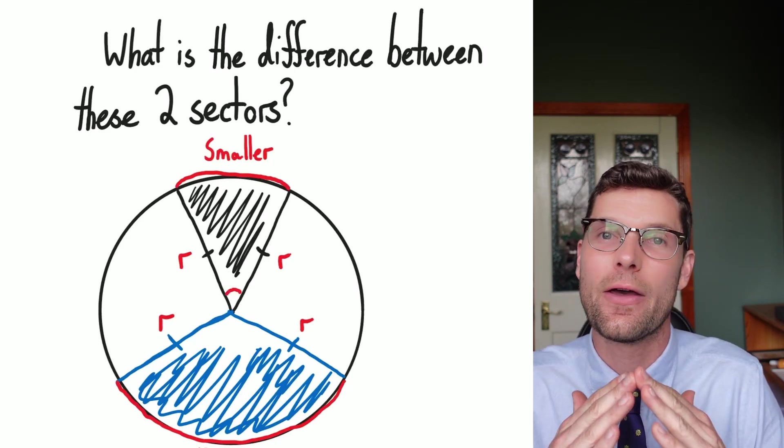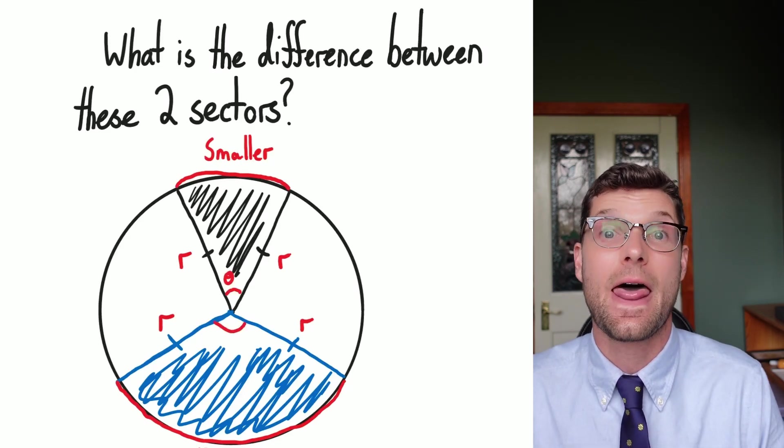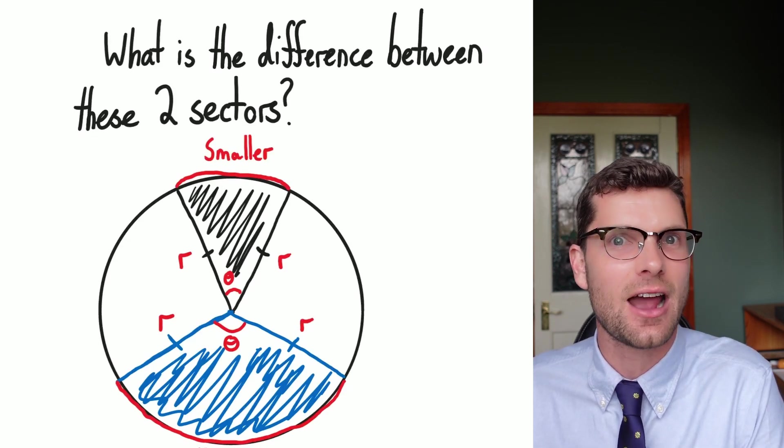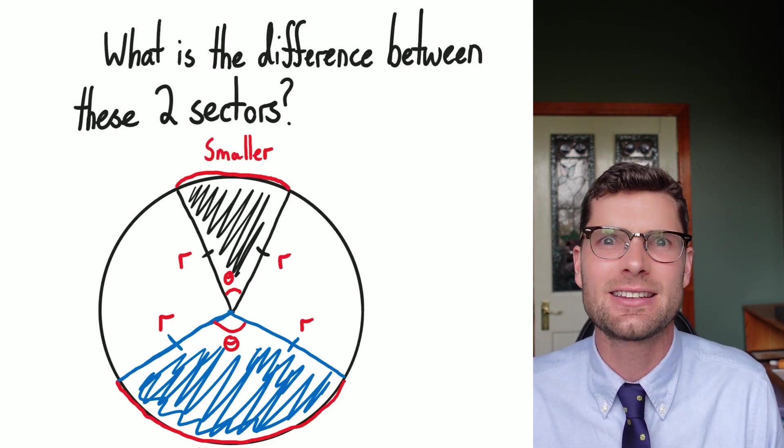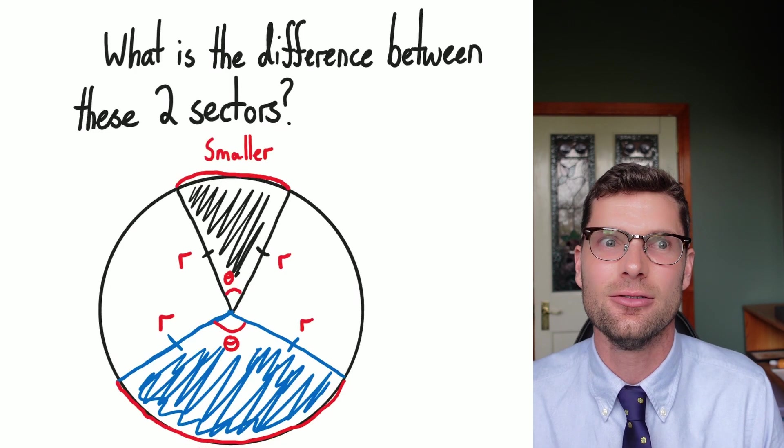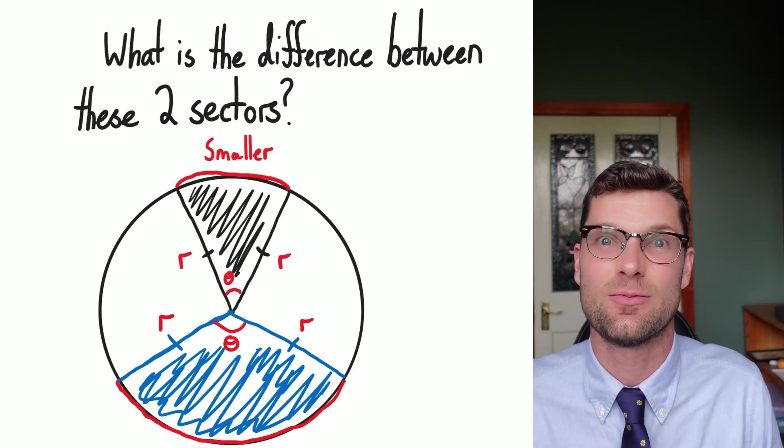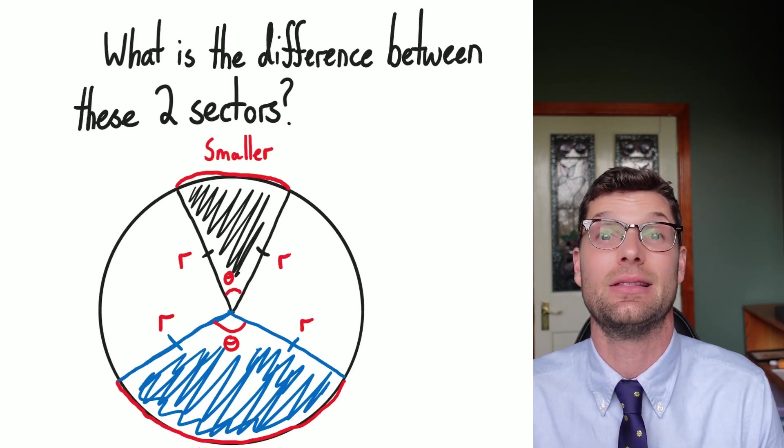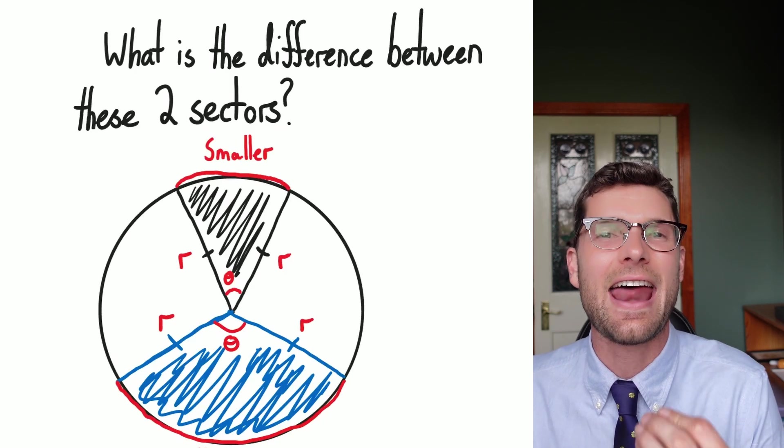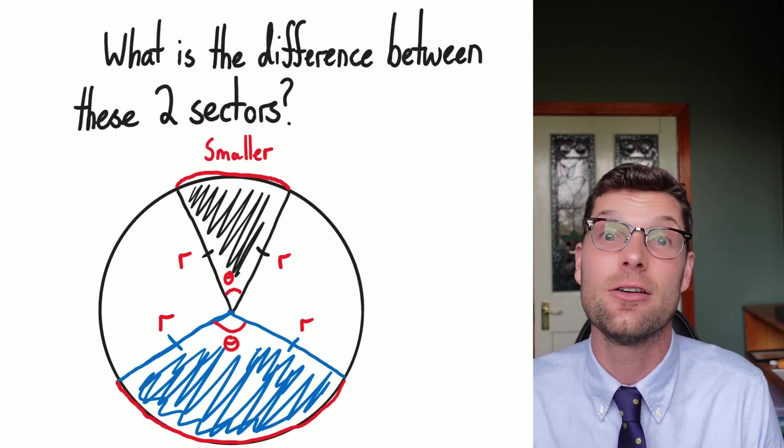So the reason that the circumference is longer in the blue section is because the angle at the radius where those two arms meet, that angle is larger, so that means that the circumference is larger as well. For the black section, it's a lot smaller of an angle, so that means the circumference must be smaller as well. I'm taking up less of the circle and I can represent that from the angle in the center.